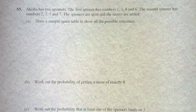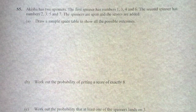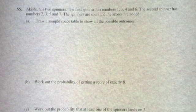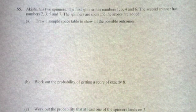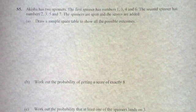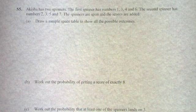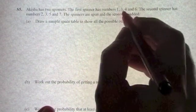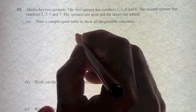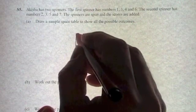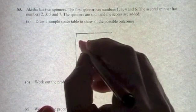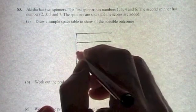This last probability question: Akisha has two spinners. The first spinner has numbers 1, 3, 4, 6. The second spinner has numbers 2, 3, 5, 7. The spinners are spun and the scores are added. Draw a sample space table to show all possible outcomes. In probability, we call it a sample space. It's got four numbers on the first spinner, so it's going to be four rows, and four numbers on the second spinner, so that's going to be four columns.